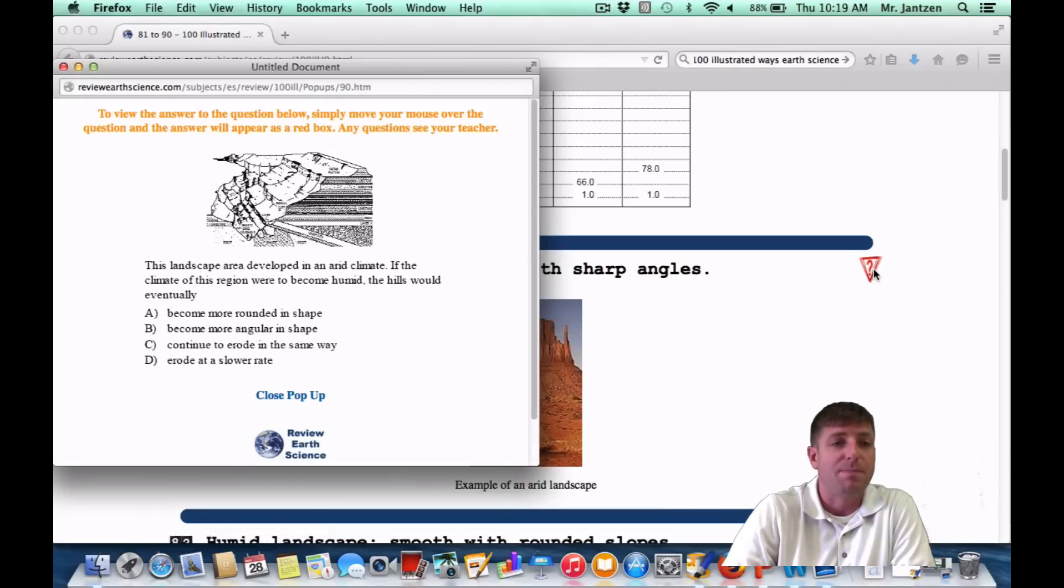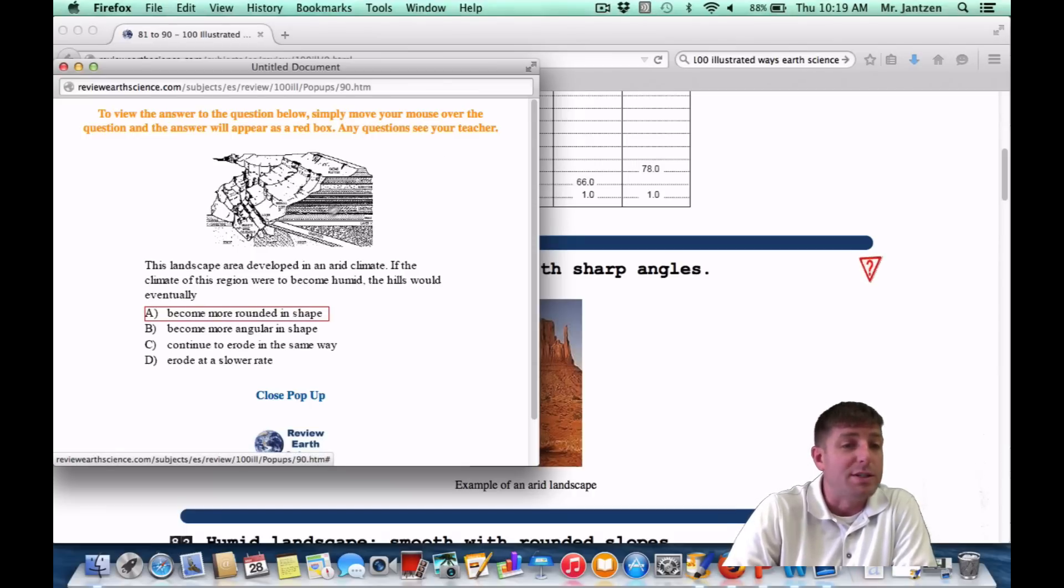On the regents, it may appear something like this: this landscape area developed in an arid climate. If the climate in this region were to become humid, the hills would eventually what? So they're not going to be arid anymore. They're actually going to become a little bit more rounded. Or choice A.